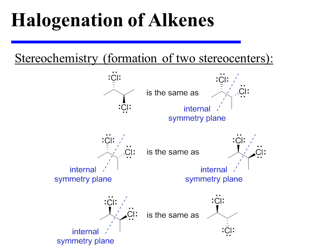The internal symmetry of that meso product is difficult to see in the conformation in which it was originally drawn. It is much more easy to see that internal symmetry if we rotate around the central carbon-carbon bond. That produces a conformation where the internal plane of symmetry is readily apparent. Since we can now see that this molecule possesses an internal plane of symmetry, we know that it is identical to its mirror image.